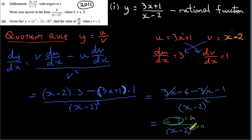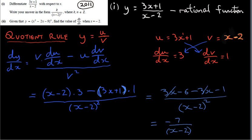We don't have to explicitly state what k and n are — the answer is automatically in this form. Just to mention: z is the set of integers, meaning positive or negative whole numbers. Minus 7 is an integer — a negative whole number. Plus 2 is an integer — a positive whole number.